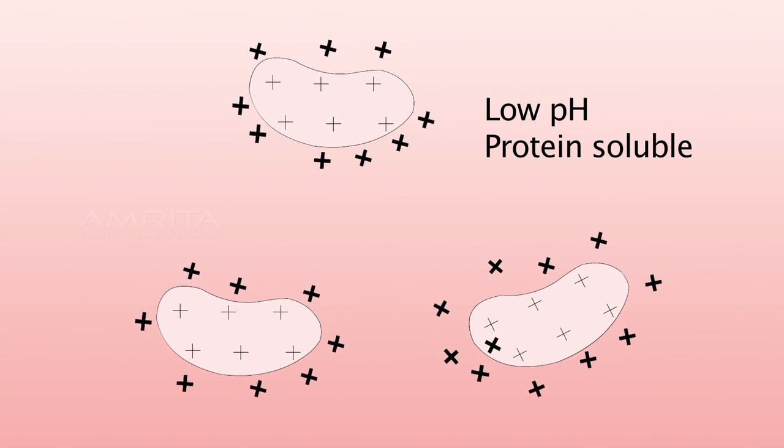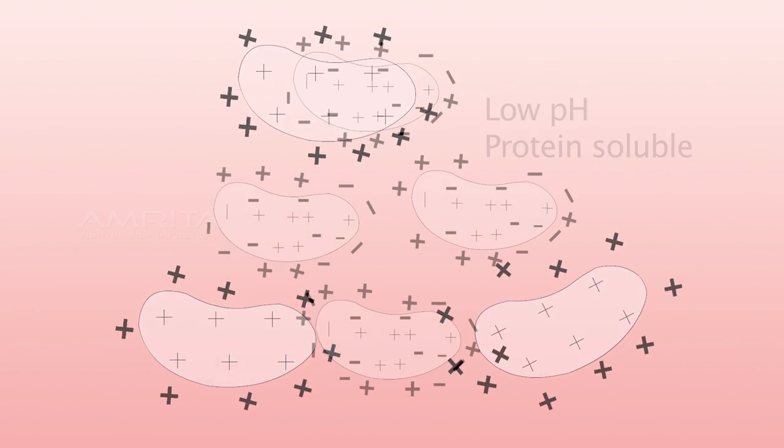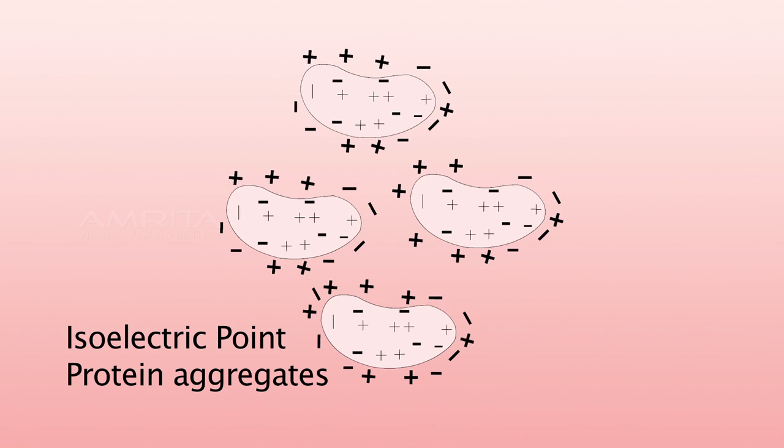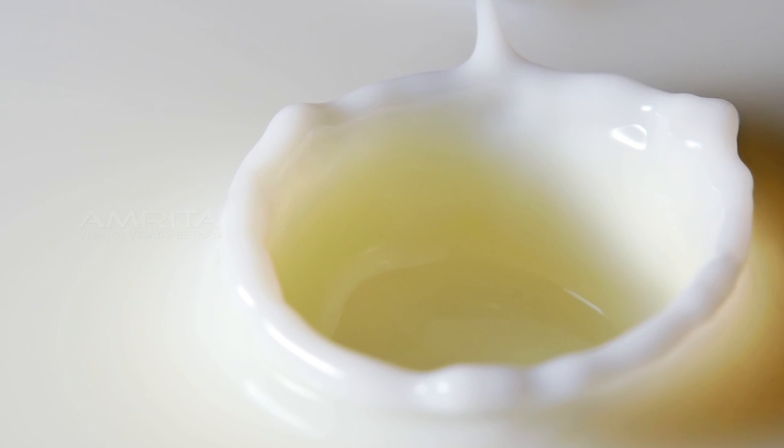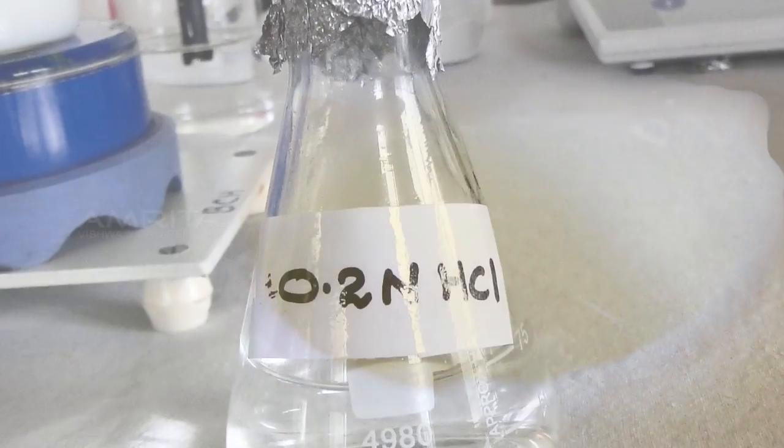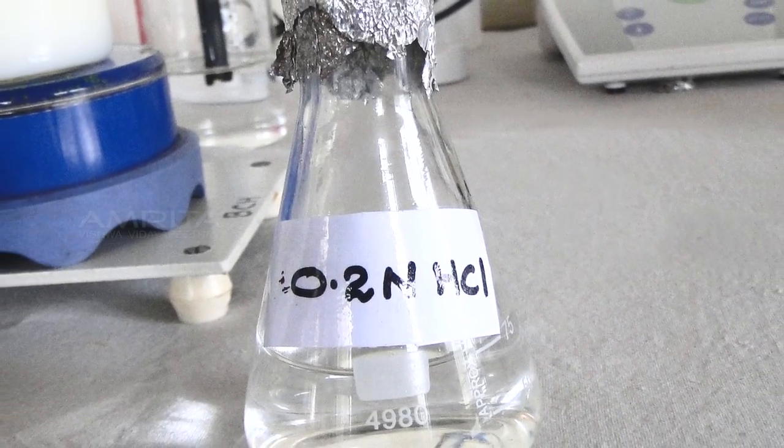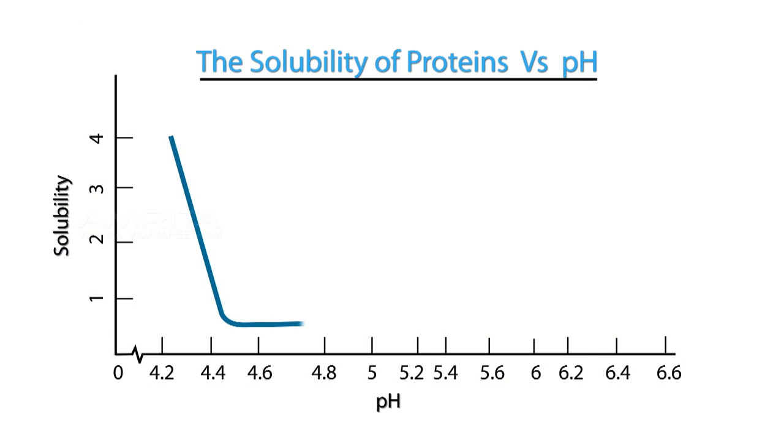The isoelectric point of a protein is a pH at which the molecule is electrically neutral. As the pH of milk is much higher than the isoelectric point of casein, to precipitate the casein, dilute hydrochloric acid is added drop by drop to the milk until the isoelectric point is reached.